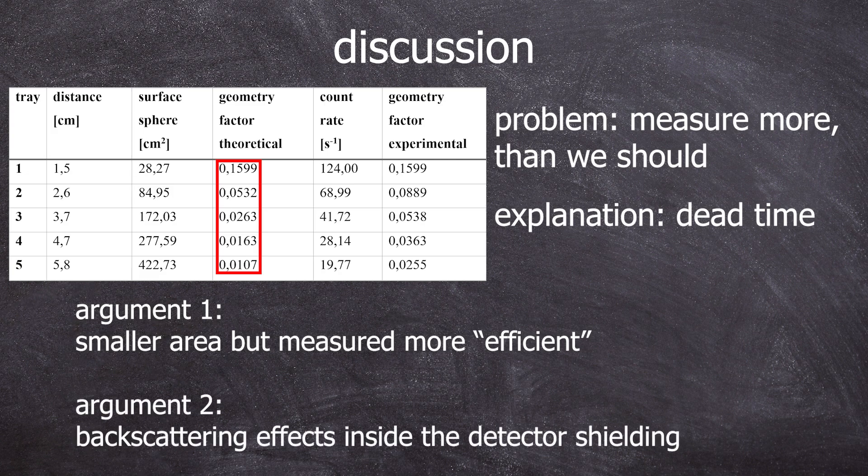You could also normalize it the other way around and argue using backscattering effects. In summary, for the discrepancies between our values, two factors contribute to the difference between the theoretical and the experimental values, both of which cannot be accounted for in the geometry factor as calculated. For closer samples, there is an increased dead time due to the higher count rate, and for samples that are further away, backscattering effects come into play.